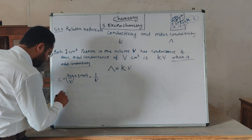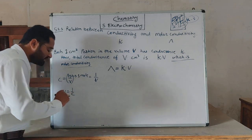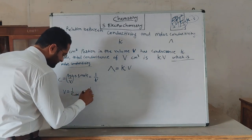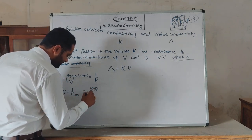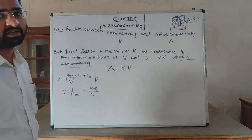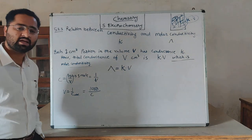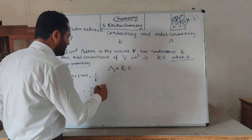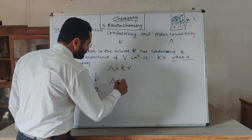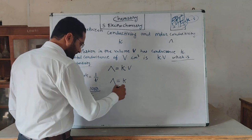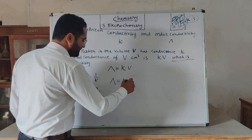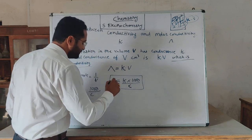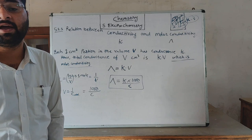Since concentration C equals n divided by V, and for one mole of electrolyte n equals 1, V equals 1 divided by C. But since we use centimeter cubed units, we multiply by 1000. Hence, lambda equals K times 1000 divided by C. This is the relation between conductivity and molar conductivity.